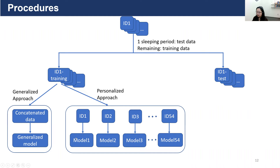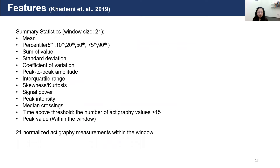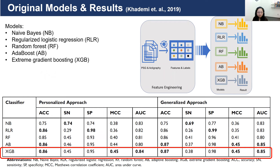Those personalized models were applied to the test data set of each participant accordingly. In that paper, only summary statistics were used as features in the machine learning model with a window size of 21 epochs. Instead of using a window of only five epochs, a window size of 21 epochs was used to calculate mean, percentile, sum of values, standard deviation, and so on as features. The paper also compared five different machine learning algorithms: naive Bayes, regularized logistic regression, random forest, eta boost, and extreme gradient boosting — using the exact same features.